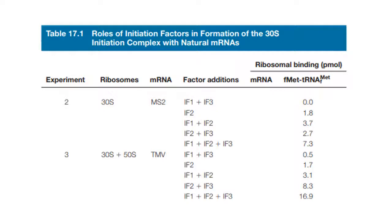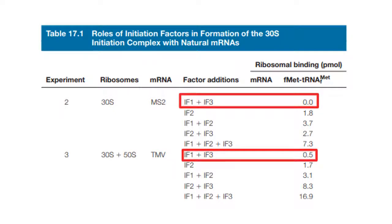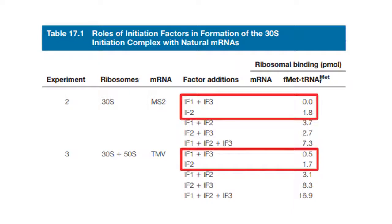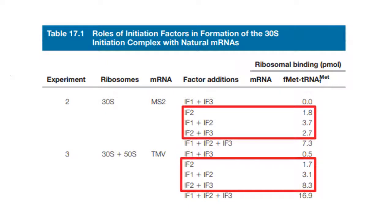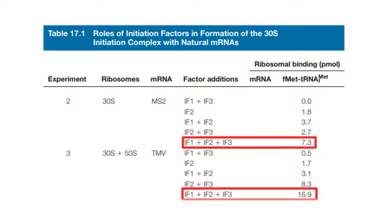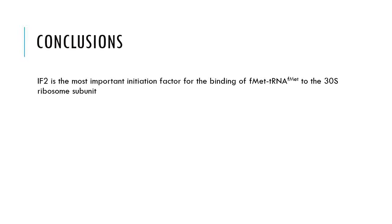The next two experiments are a bit more informative. In experiment two, the MS2 phage is being used, and in experiment three, the TMV phage is being used. The trends in these two experiments are the same. When IF1 and IF3 are added, there is basically no binding of FMET to the 30S subunit. In fact, when IF2 is added on its own, it results in more ribosomal binding compared to when the other initiation factors are combined. When you add another initiation factor to IF2, ribosomal binding increases. But like in the previous experiments, FMET binding to the 30S subunit is highest when all three initiation factors are present. So these two experiments using the MS2 and TMV phages show that IF2 is the most important initiation factor for the binding of FMET to the 30S ribosome subunit.